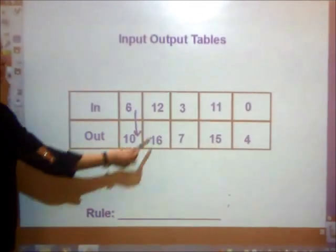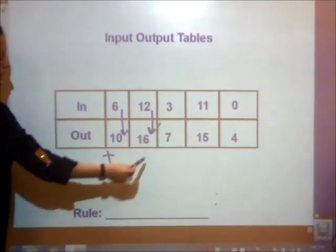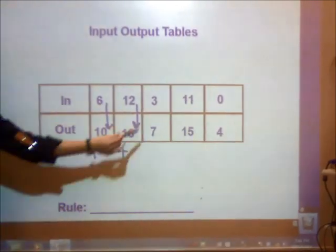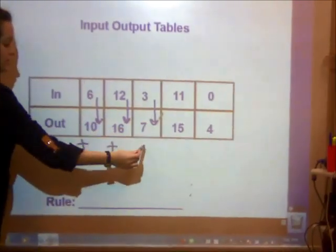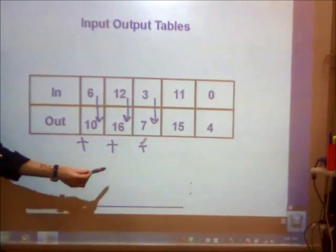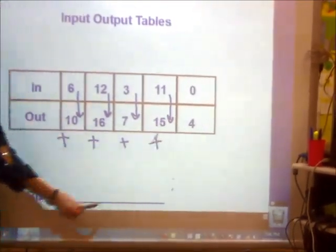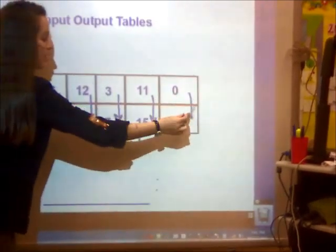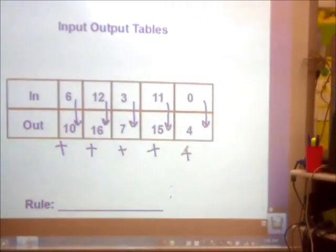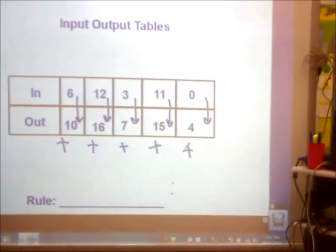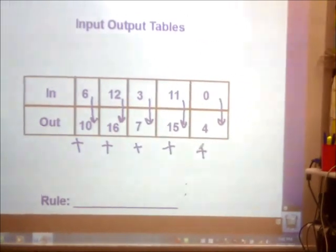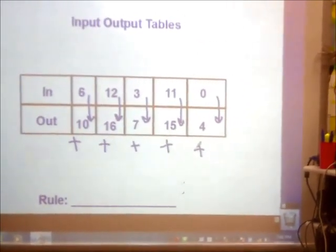Let's look at the next one. 12 to 16, my number is increasing. 3 to 7, my number is increasing. 11 to 15, my number is increasing. And 0 to 4. All my numbers are getting bigger. I need to find the rule that tells me what they're getting bigger by.